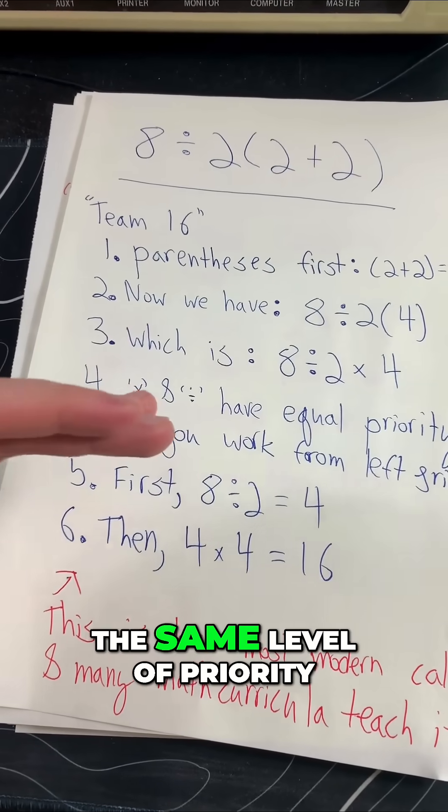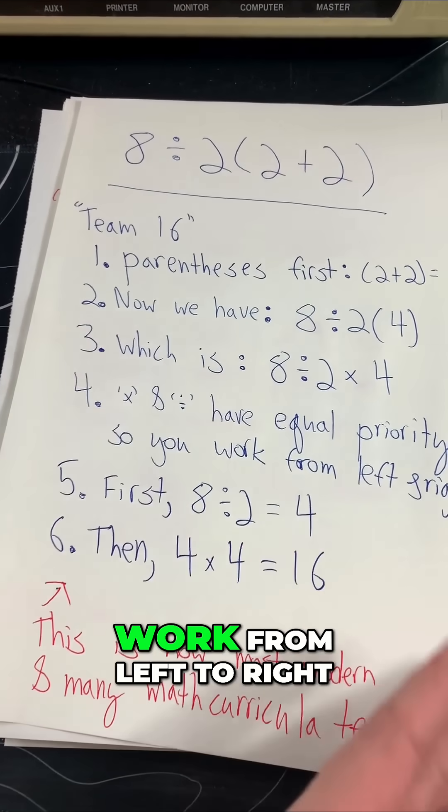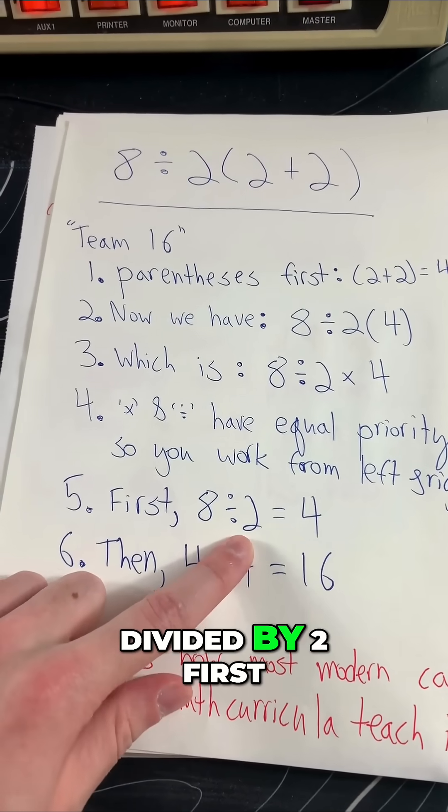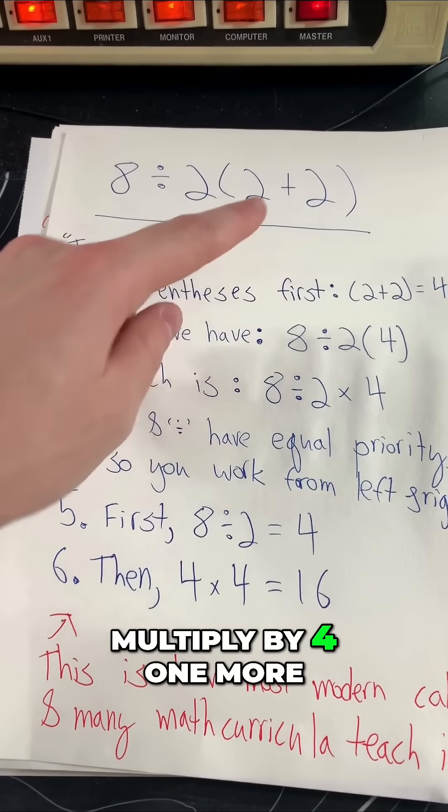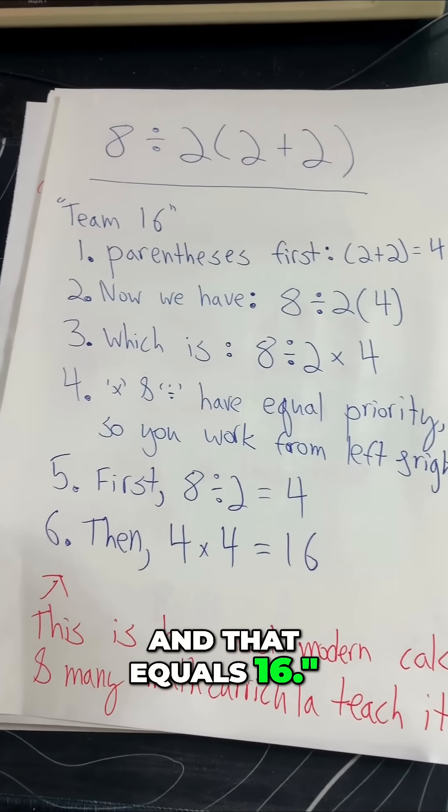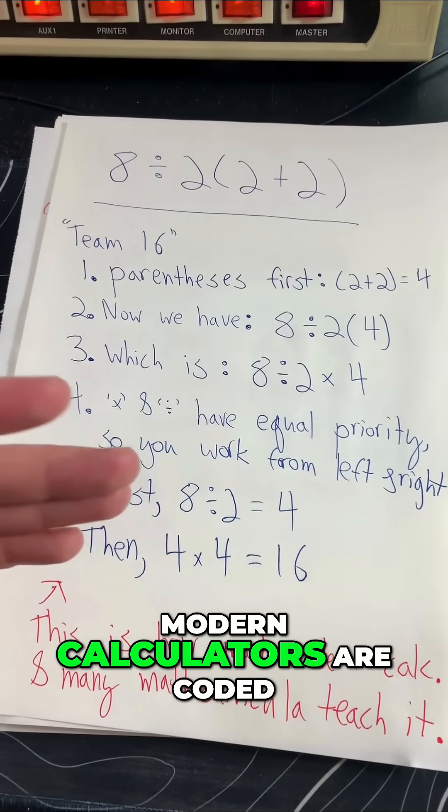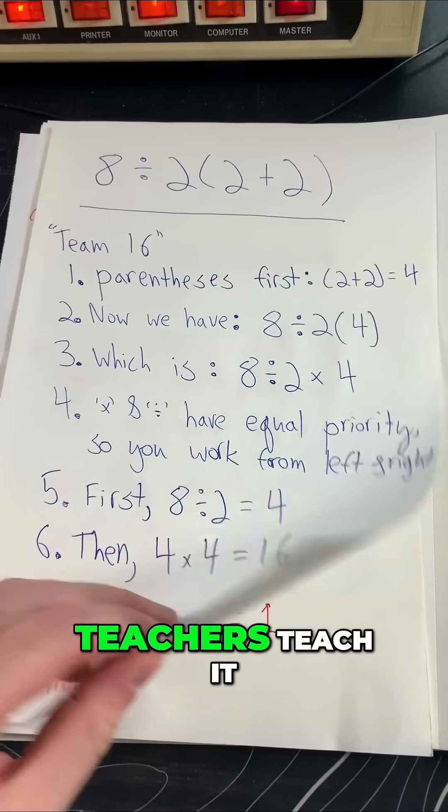Multiplication and division have the same level of priority, so we're just going to work from left to right. We're going to do 8 divided by 2 first, that equals 4, and then we're going to multiply by 4 one more time, and that equals 16. This is how most modern calculators are coded, and how many math teachers teach it.